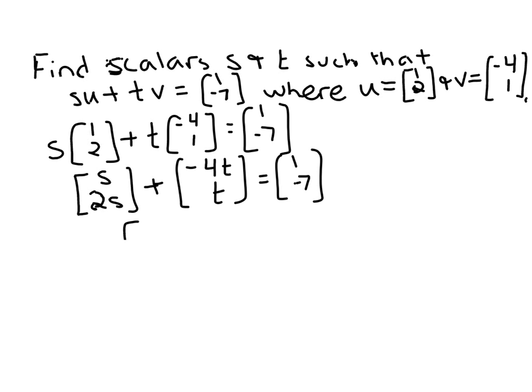And then I want to combine those vectors on the left side. So s minus 4t and 2s plus t equals the vector [1, -7].